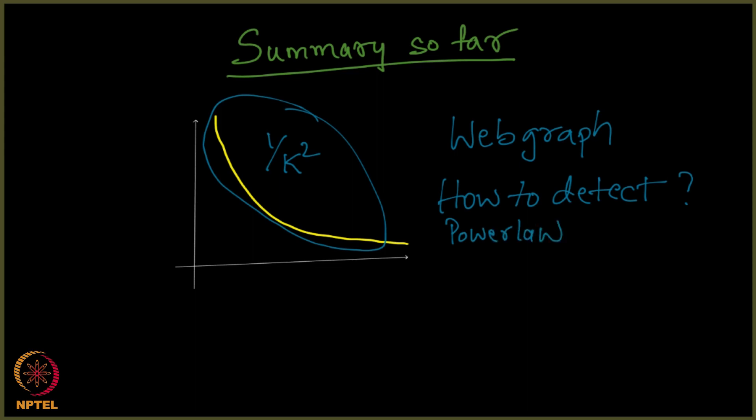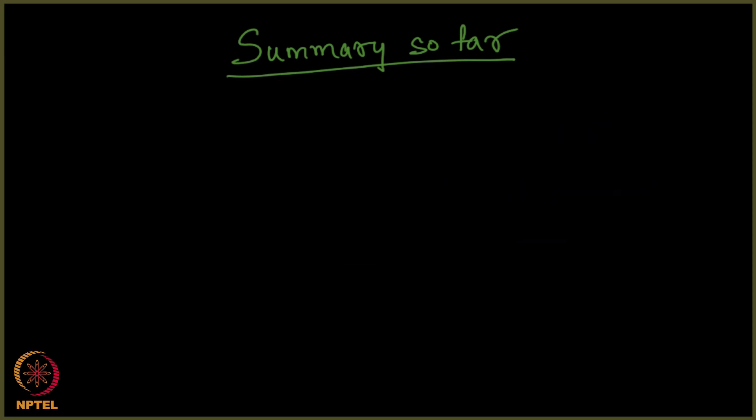Perfect. And then we switched gears and we saw the process of rich getting richer, the rich get richer phenomenon. And what was that? If you can recollect, it was what is called preferential attachment.